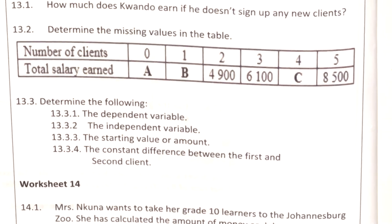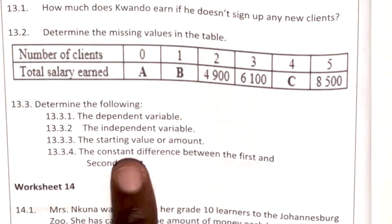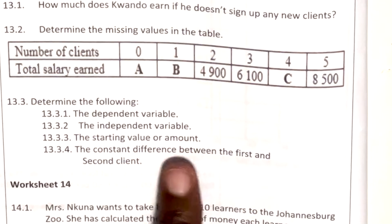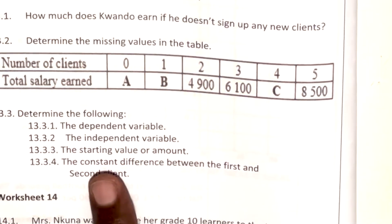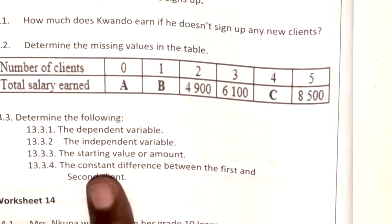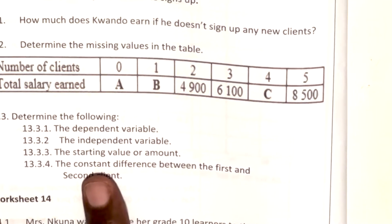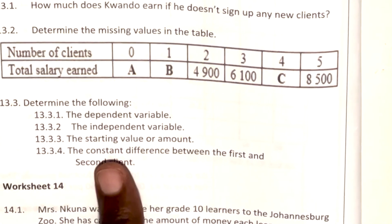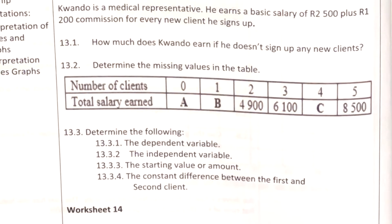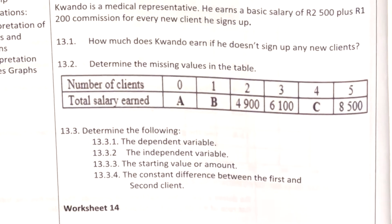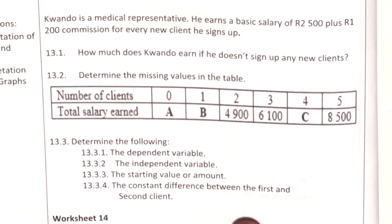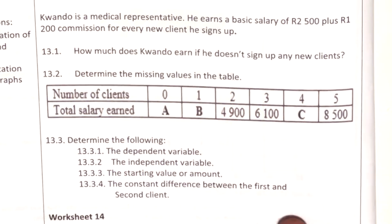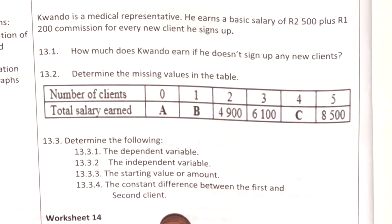The starting value or amount — when he has no clients, his starting value is R2 500. For 13.3.4, they are asking for the constant difference between the first and the second client, meaning how much more is he making from one client to the next.